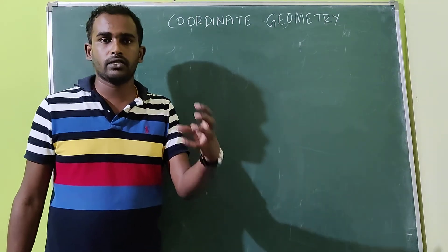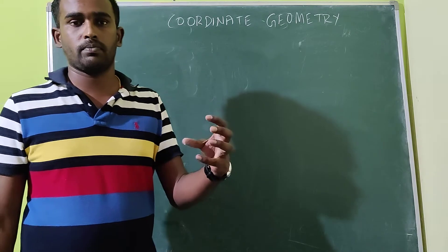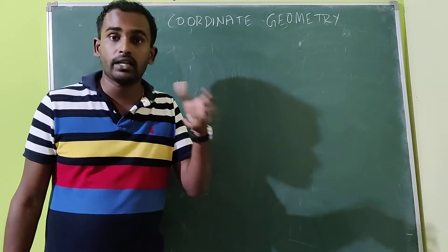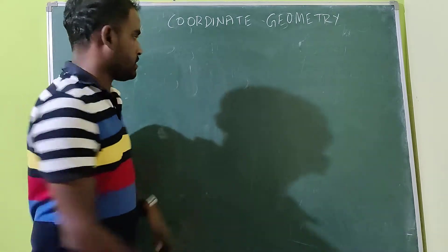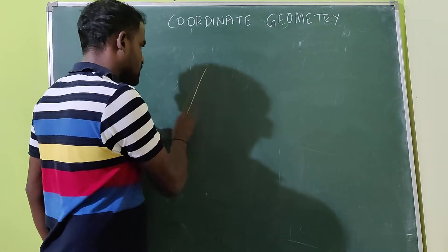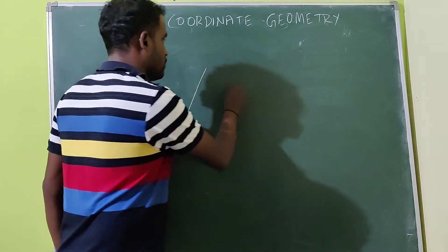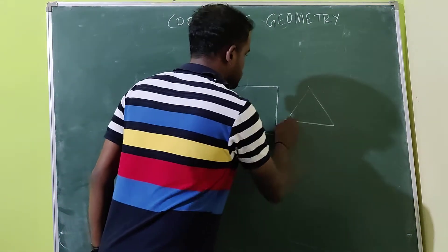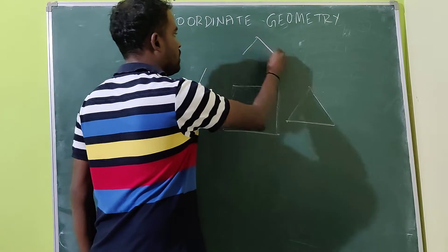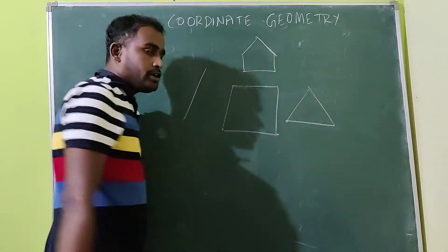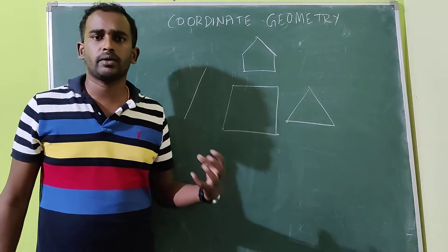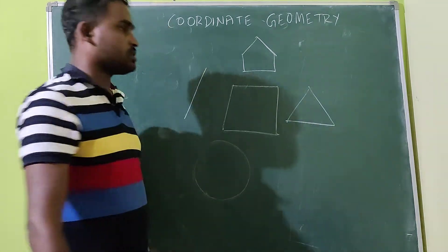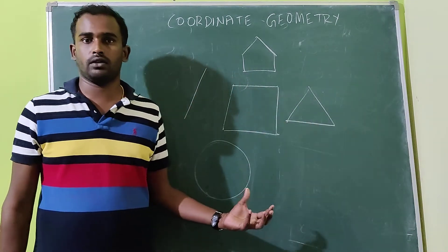Next, let us move towards geometry. Geometry means it is a branch of mathematics where we can solve some geometrical figures, such as line segments, quadrilaterals, triangles, pentagons, and different types of geometrical figures. One important concept in geometry is the circle.